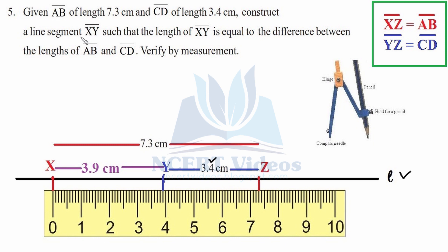The distance XY will be 3.9 cm. If you subtract 7.3 minus 3.4, you are left with 3.9 cm. To verify: measuring from X to Y on the ruler — 1 cm, 2 cm, 3 cm, and it is 1 less than 4, so it is 3.9 cm. This verifies our answer by measurement. That was question number five.